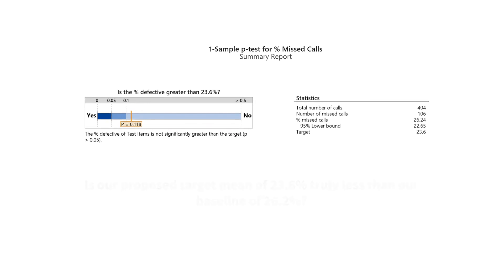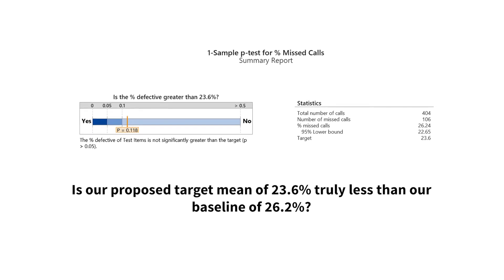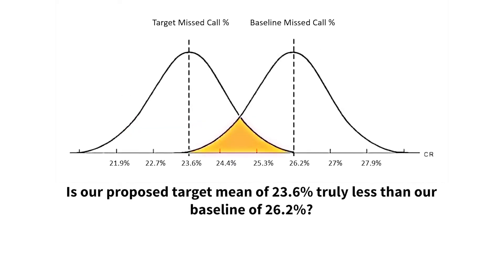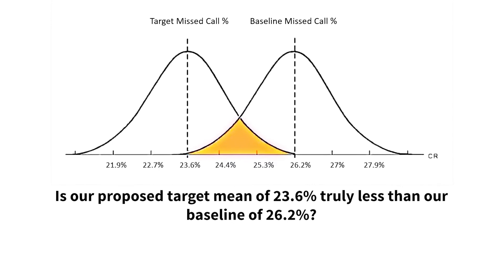In our clinic example, here's the output. Remember our question: is our proposed target mean of 23.6% truly less than our baseline mean of 26.2%? In other words, if you change nothing about your process, is it possible that the same system that gave you a 26% measurement could also give you a 23% measurement? Our p-value of 0.118 tells us that there's about a 12% chance that the same clinic that gave us the 26.2% baseline could also give us a 23.6% measurement. Since we decided at the beginning that we were looking for less than a 5% probability of this, we fail to reject our null hypothesis that our proposed target mean is no different than our baseline.